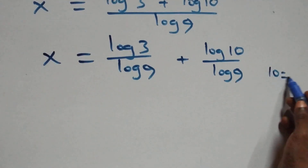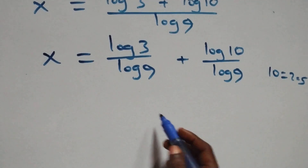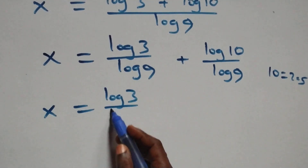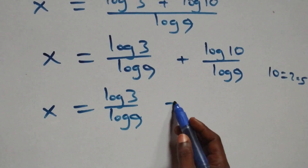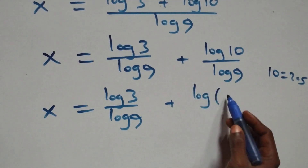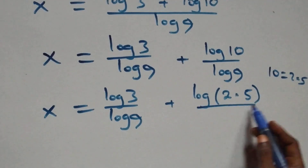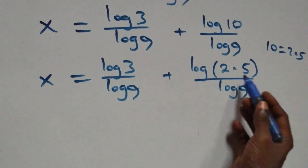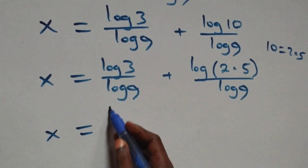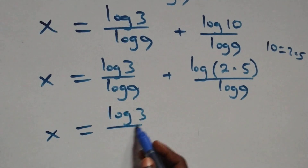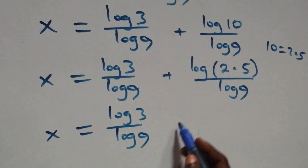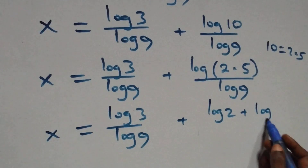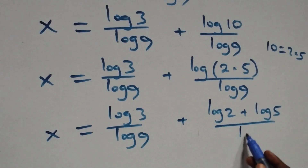Also here, we can write 10 as 2 times 5. So all we have becomes x equals log 3 over log 9 plus log(2 times 5) over log 9. This also follows from the law of logarithms, and we have x equals log 3 over log 9 plus log 2 plus log 5 over log 9.